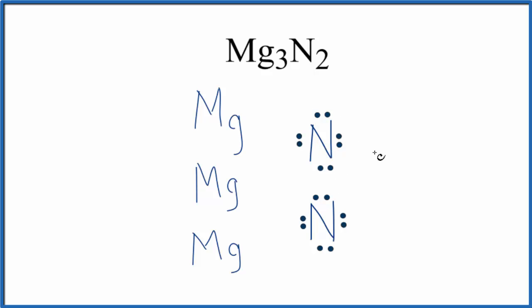Now the nitrogen, each one has gained three electrons, so electrons are negative, becomes three minus, and each magnesium has lost two electrons, so it becomes two plus.